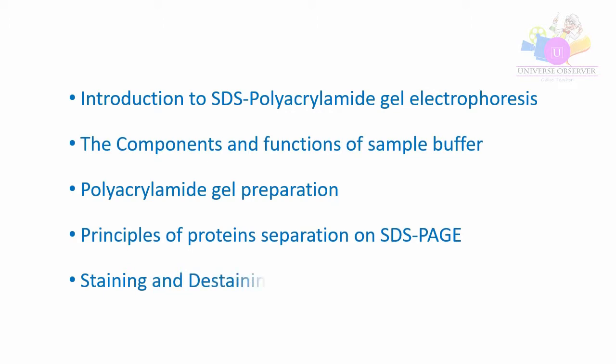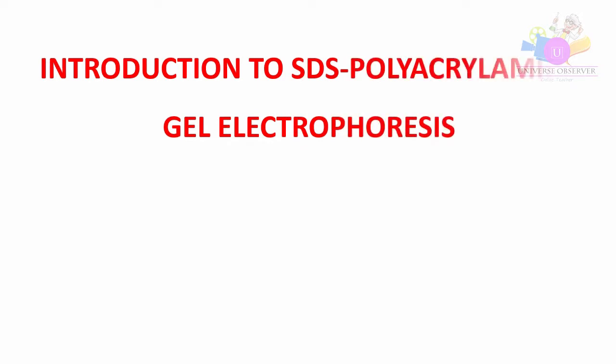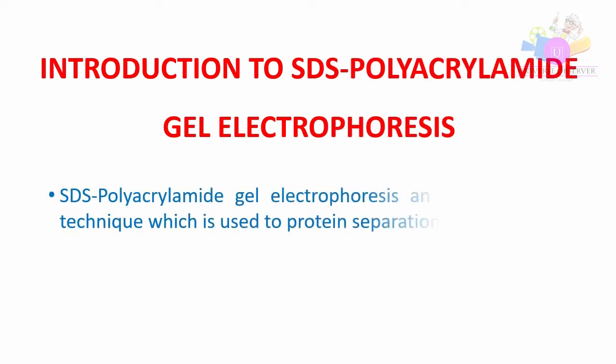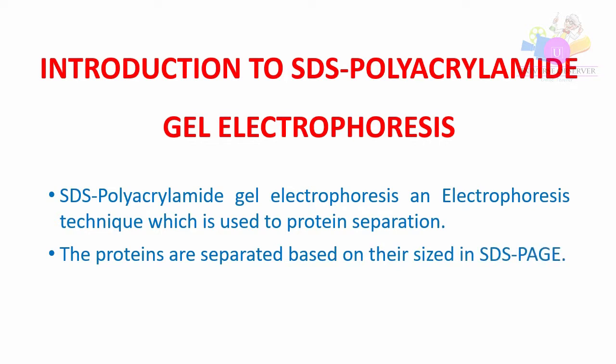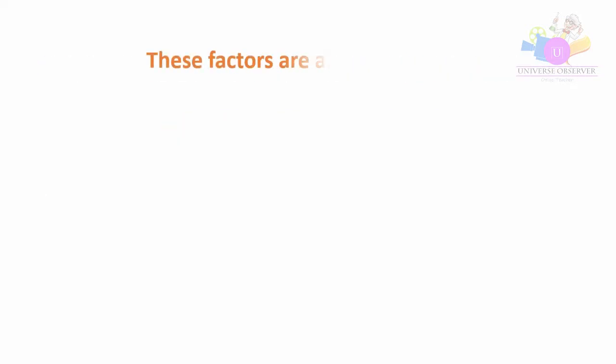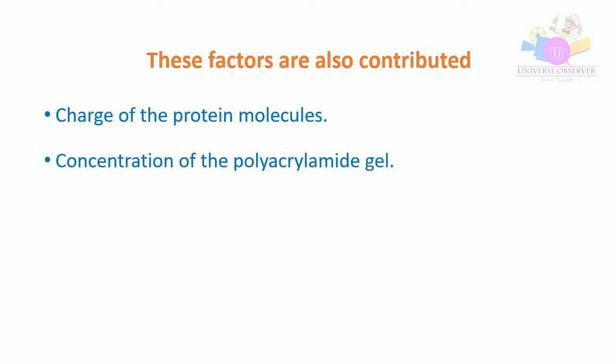This is a type of electrophoresis which is used to separate proteins based on their molecular weight. The protein molecules are separated based on their size. However, the charge of the protein molecules, concentration of the polyacrylamide gel, pH of the polyacrylamide gel and electrophoresis voltage affect protein separation.